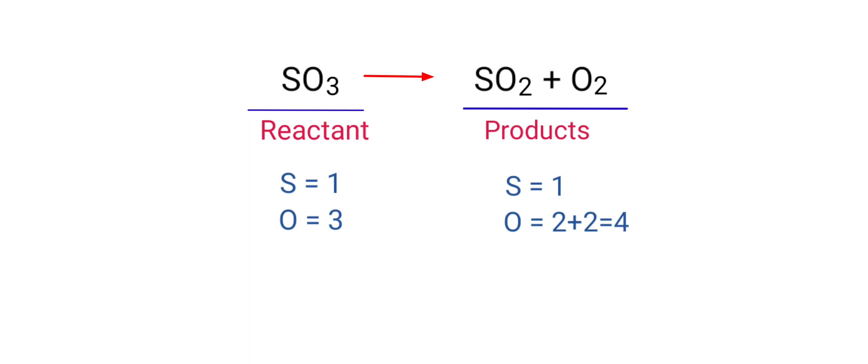If you look at this equation, it is not balanced. On the reactant side there is 1 Sulphur atom and 3 Oxygen atoms, and on the product side there is 1 Sulphur atom and 4 Oxygen atoms. The number of atoms are not balanced on both sides.